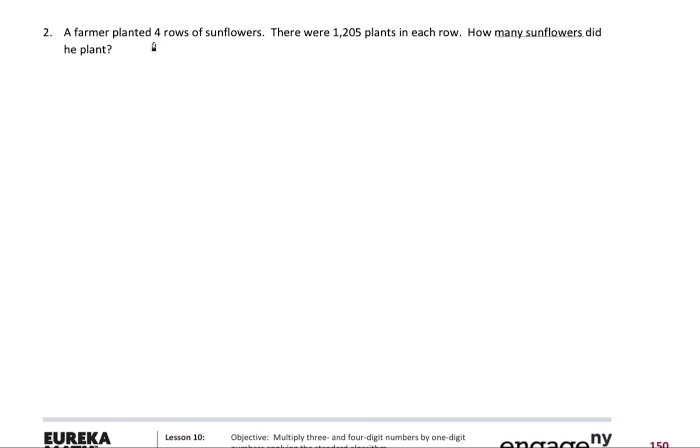So now I'm looking at the actual numbers from my word problem. It tells me that I have four rows and I have 1,205 plants in each row. So that word 'rows' automatically makes me think of multiplication.